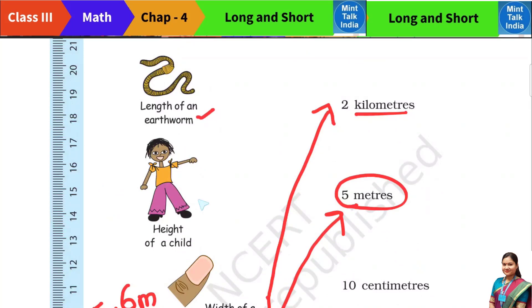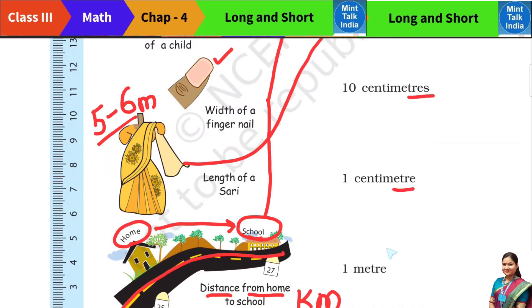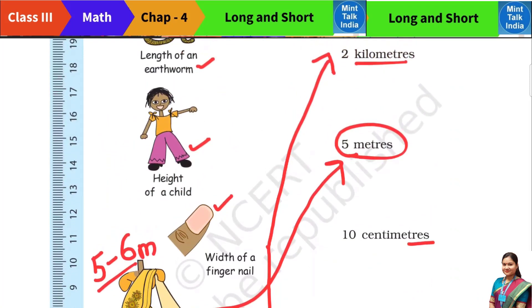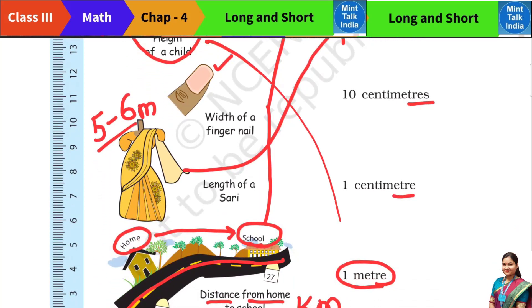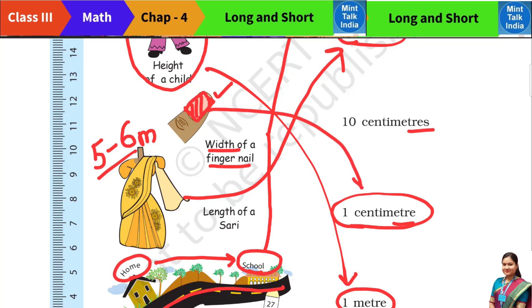On the left side we still have an earthworm, a child, and a fingernail. On the right side we have one centimeter and one centimeter options remaining. A small child's height — if you measure the height of a child in your class using a long strip of paper, the height of the child is always approximately equal to 1 meter. The width of a fingernail is about 1 centimeter — we don't let it grow too long, we cut it.